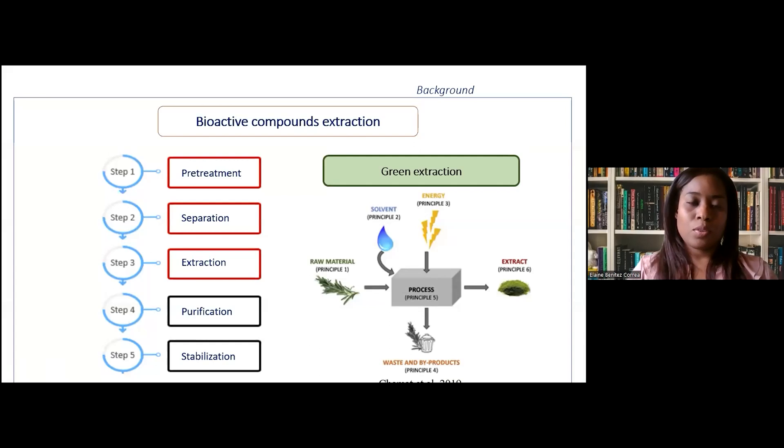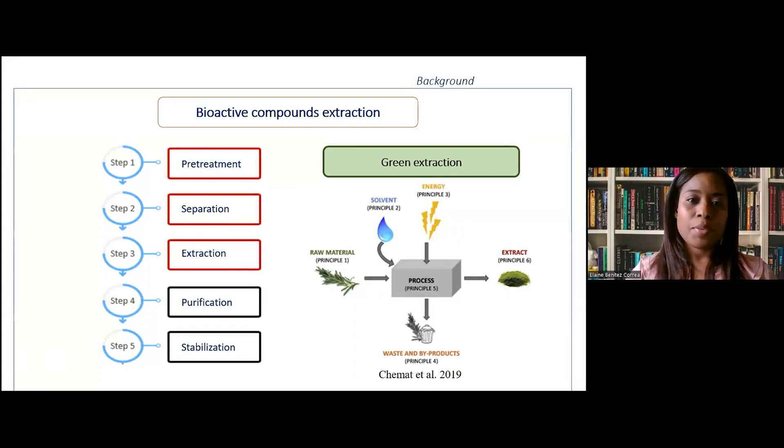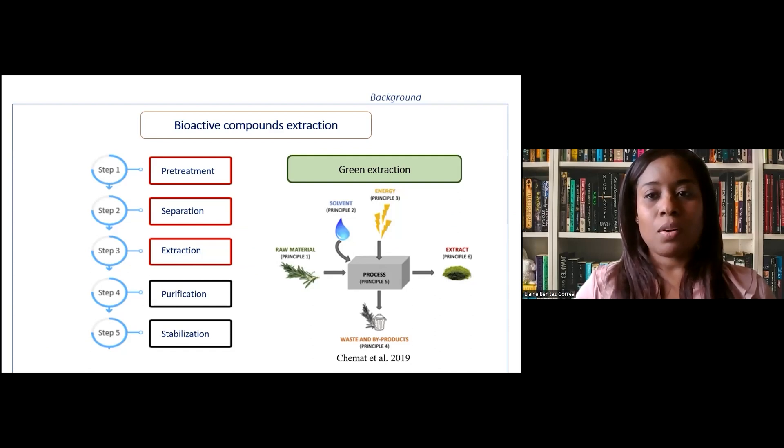The general procedure to obtain bioactive compounds involves basic steps as treatment, separation, extraction, purification, and stabilization of molecules. Traditional techniques have disadvantages because they need large amounts of solvents, longer extraction time, and energy consumption. That's why today emerging methods are being applied that comply with green extraction criteria, applying sustainable raw materials, alternative solvents, reducing energy consumption, guaranteeing a safe extract, and ideally proposing a circular economy across food wastes.